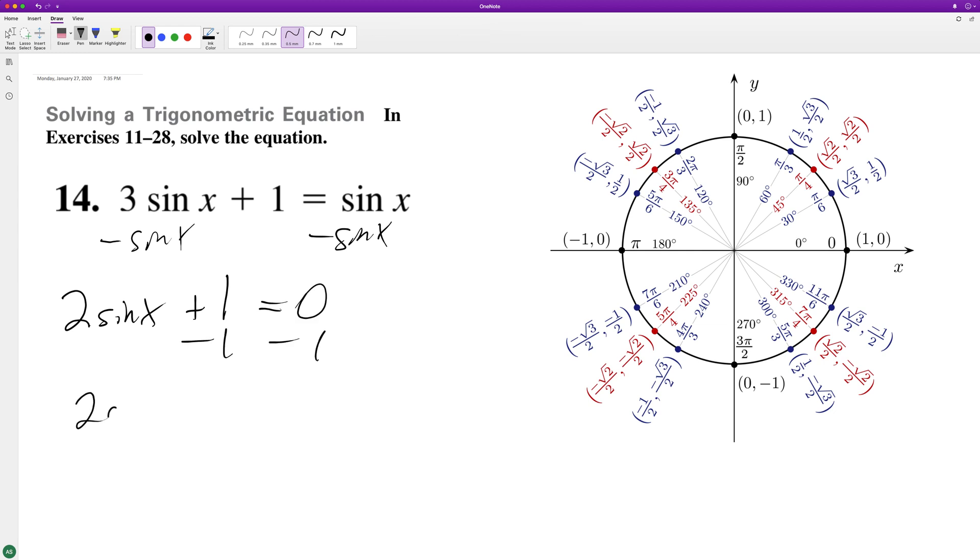Move the 1 to the other side. 2 sine of x equals negative 1. Divide by 2. We get sine of x is equal to negative 1 half.